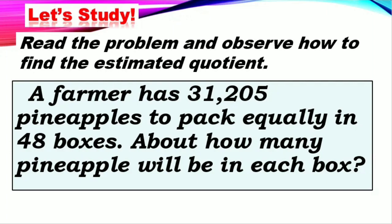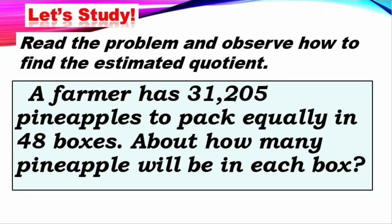Now let's study how to find the estimated quotient. Let's read the sample problem: A farmer has 31,205 pineapples to pack equally in 48 boxes. About how many pineapples will be in each box? Remember, when we see the word clue 'about' in a word problem, it means we are looking for an estimated answer.